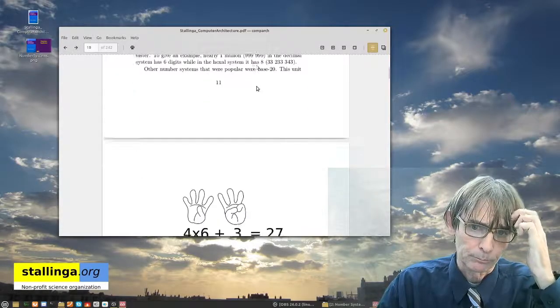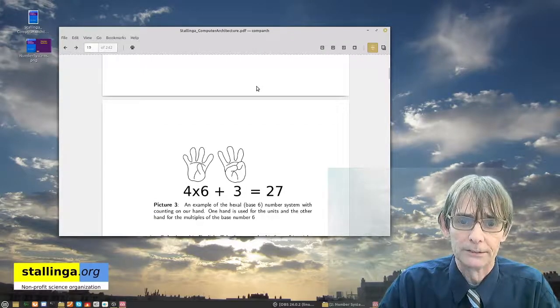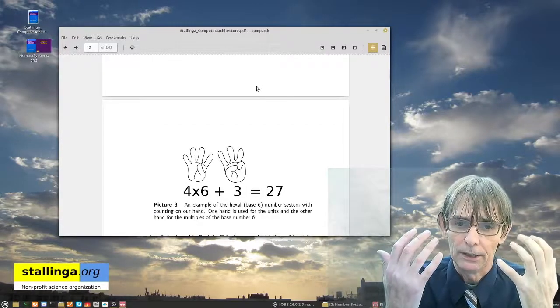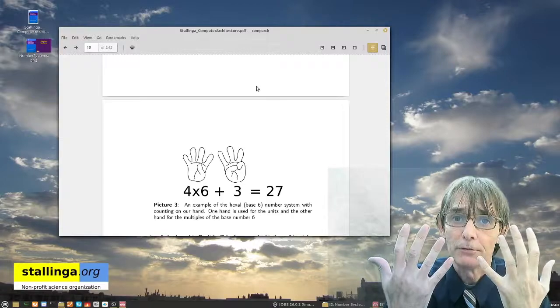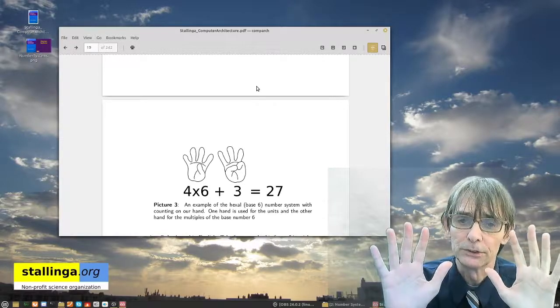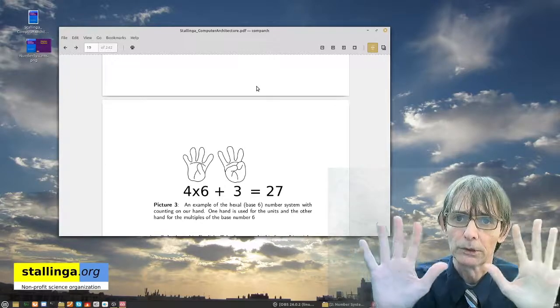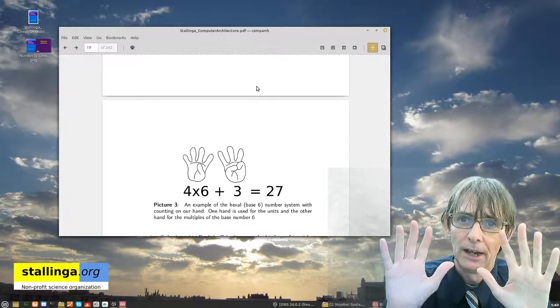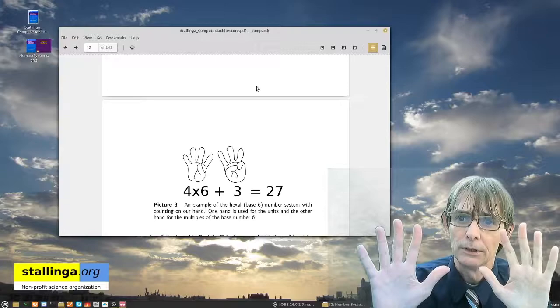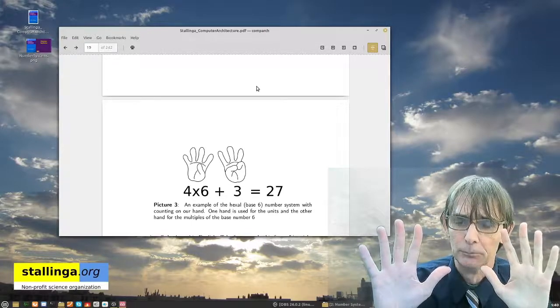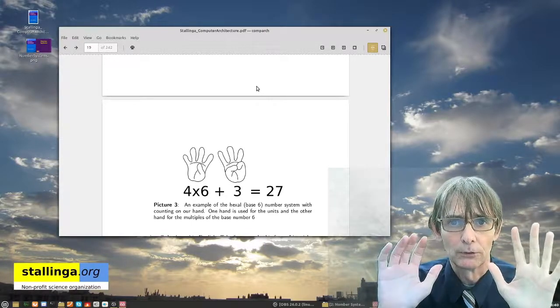And this is caused by their hands. Because if you use your hands, which have five fingers, it is easy to use the system based on six. To show you how this works, look I have here two hands and this one will count the multiples of six and this will count the units.